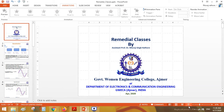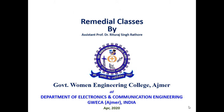Before understanding quantization, we know that the first step for any signal conversion from continuous time signal to discrete time signal is done through an analog to digital converter. Analog to digital conversion is a three-step process. The first part is sampling, the second part is quantization, and the third part is coding. We have learned about sampling in our previous lectures. Today we will talk about the quantization technique.